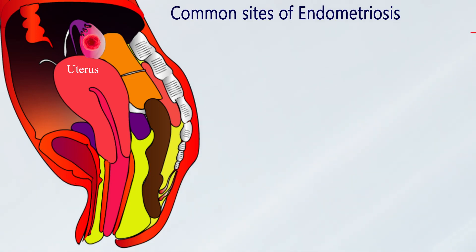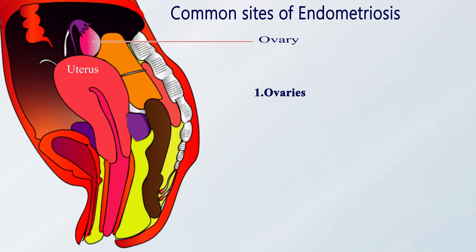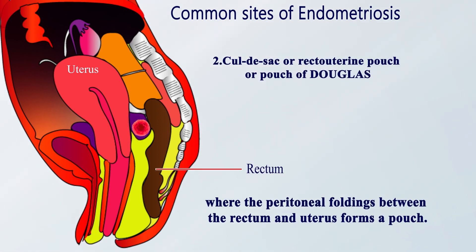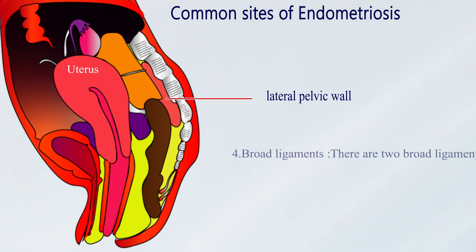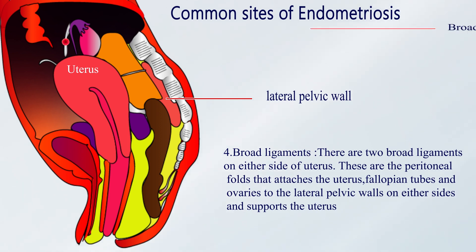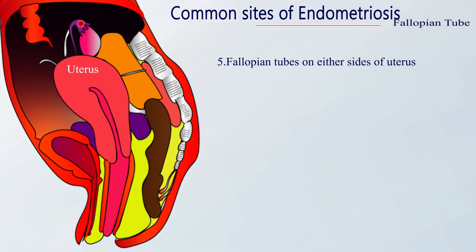The ten most common sites of endometriosis: number one is the ovaries. Number two is the cul-de-sac, where the peritoneal folding between the rectum and the uterus forms a pouch. Number three is the utero-sacral ligament, which connects the uterine cervix to the sacrum on either side and supports the uterus. Number four is the broad ligaments — peritoneal folds attaching the uterus, fallopian tubes, and ovaries to the lateral pelvic wall. Number five is the fallopian tubes.